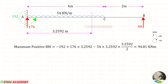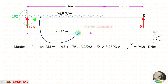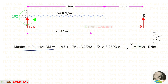Now let us find the maximum positive bending moment using the right-hand side rule. MA acts anti-clockwise (negative), RA acts clockwise (positive), and the UDL acts anti-clockwise (negative). With the UDL, we multiply the load by the distance and divide by 2. The maximum positive bending moment works out to 94.8 kNm.